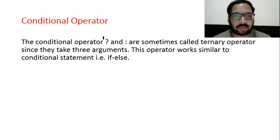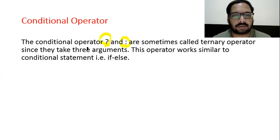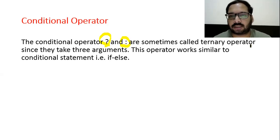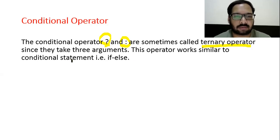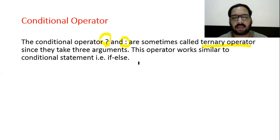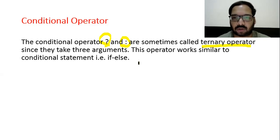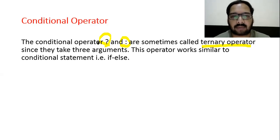Conditional operator: we use two symbols — question mark and colon. The conditional operator, question mark and colon, are sometimes called the ternary operator since they take three arguments. This operator works similar to the conditional statement, that is if-else. Sometimes instead of using if-else, we want to check conditions in a single line to recognize the true or false part — for that we use the conditional operator.